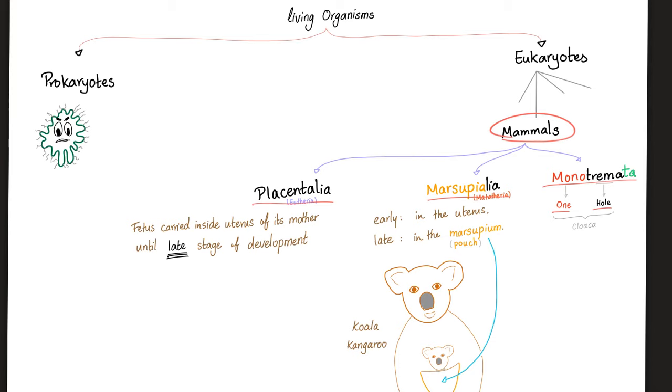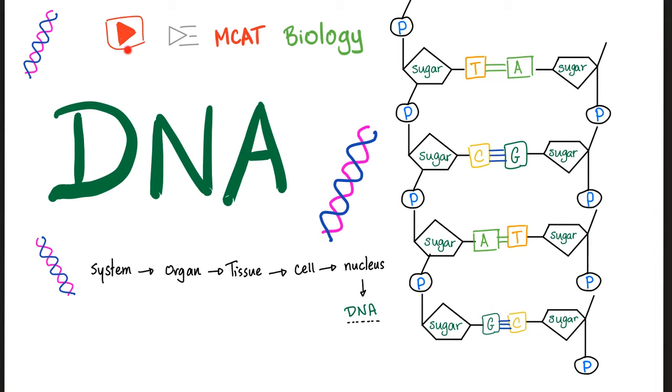Let's talk about placentalia. The fetus is carried inside the uterus of its mother until a late stage of development. Example here is humans. Marsupialia: early, the fetus is in the uterus. Late, the fetus is carried in this pouch called the marsupium. How about the monotremata? They have the one hole. The one hole here is that cloaca. If you do not know what the cloaca is, there is no hope for you.